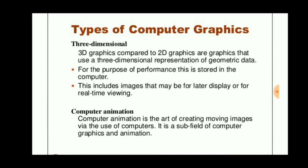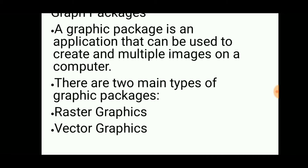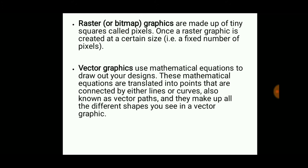Computer animation is the art of creating moving images via the use of computers. It is also known as computer graphics. To obtain graphics, graphic packages — which are software — are needed. They include raster graphics and vector graphics. Raster graphics, as said before, consists of pixels that are the basic element for the formation of a large image.